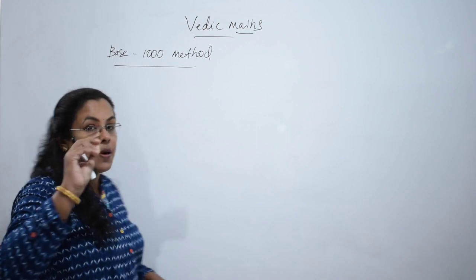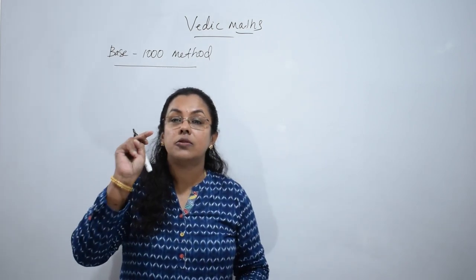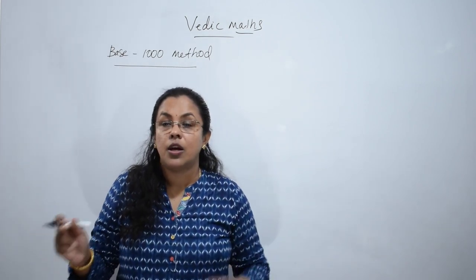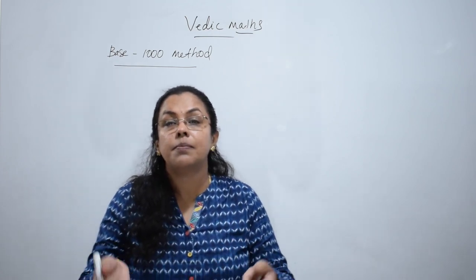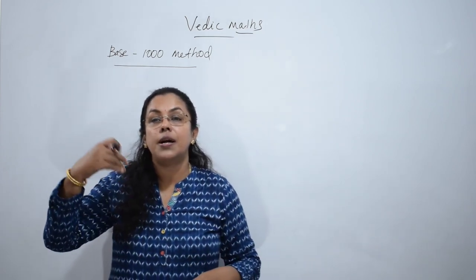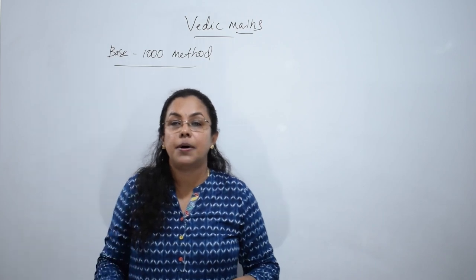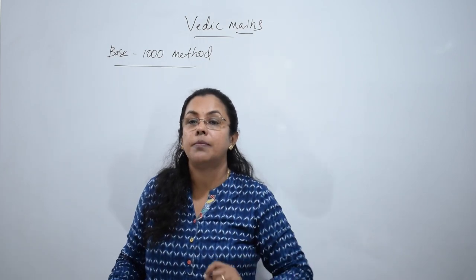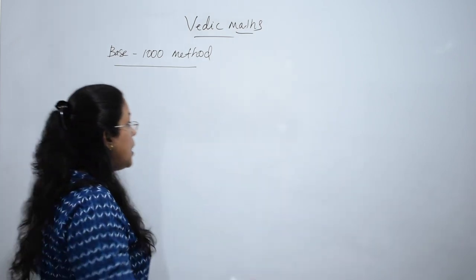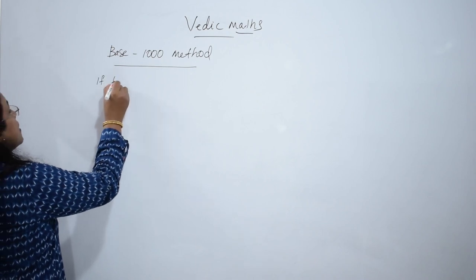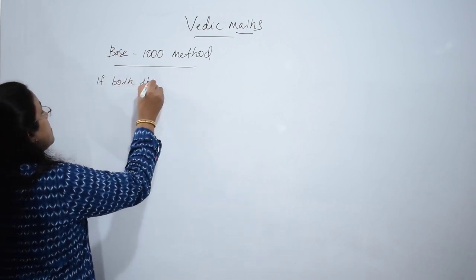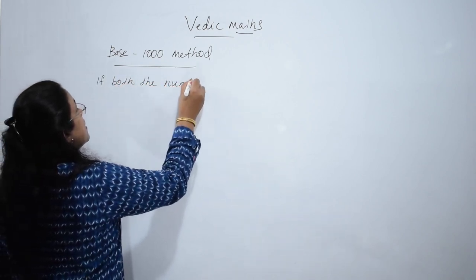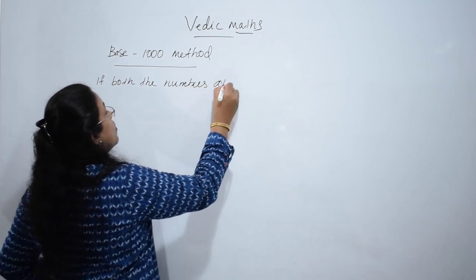Here it is base 1000 method, and three cases arise: if both the numbers are above 1000, both the numbers are below 1000, or one number above 1000 and one number below 1000. I am taking the first case, if both the numbers are above 1000.